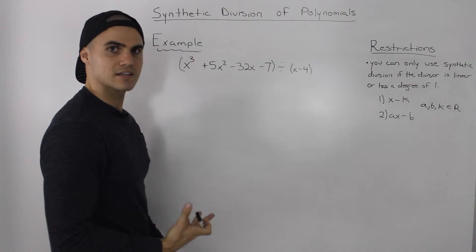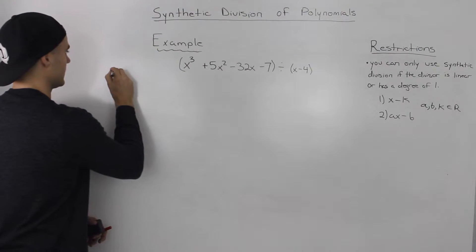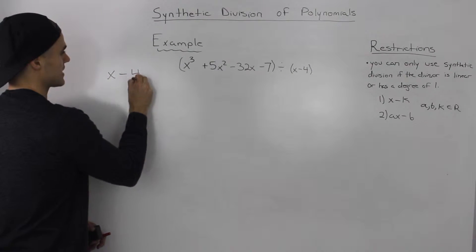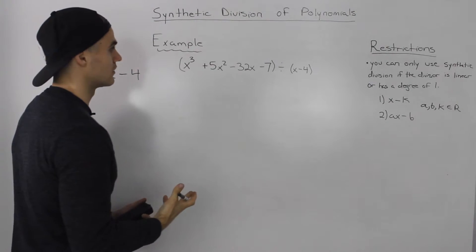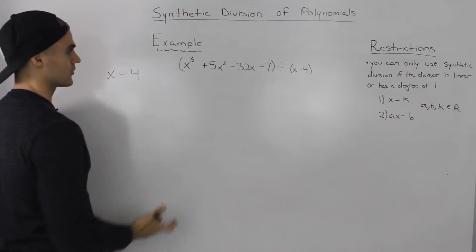Now with synthetic division, the first thing you always want to check is, is the divisor, in this case X minus 4, is it linear? And it is linear. It has a degree of one.